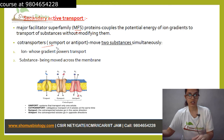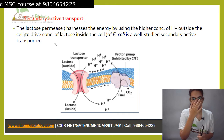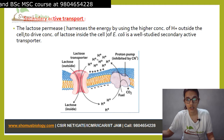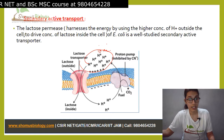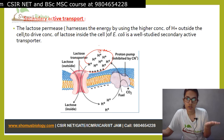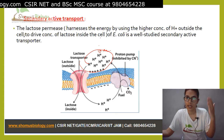A very common example is the lactose permease, which harnesses energy by using the higher concentration of H+ ions — the proton gradient — to drive the transport of lactose inside E. coli. This is well studied. There is lactose outside and the bacteria want it inside. There is a lactose transporter present, but the problem is that lactose is being taken from lower concentration to higher concentration, so energy is needed.